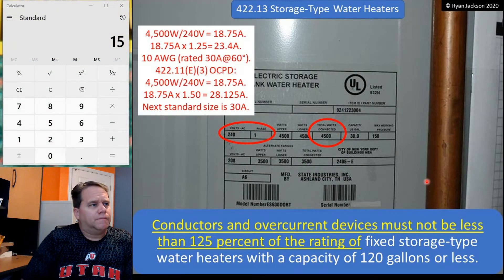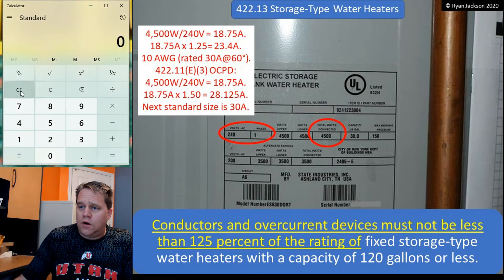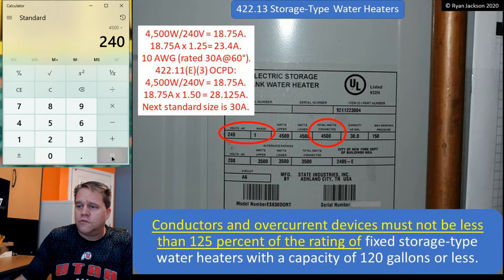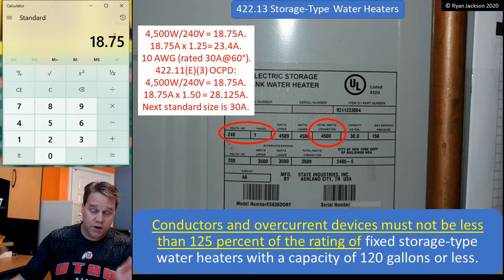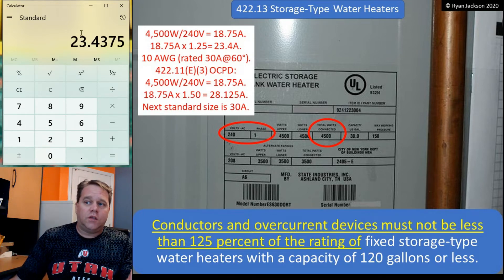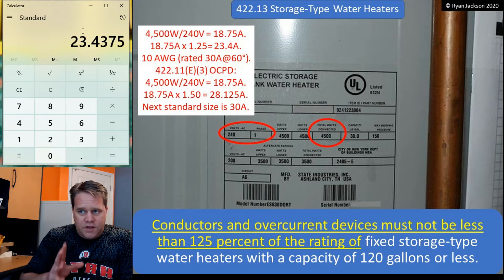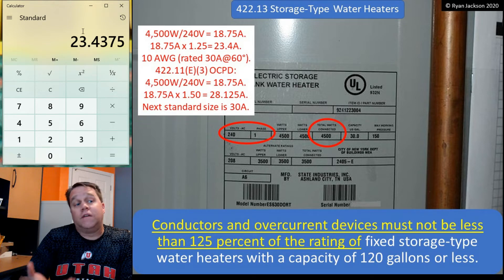Let's do one more example. Here I've got a 4,500 watt water heater at 240 volts. I take 4,500 watts divided by 240 volts — that gives me 18.75 amps. The conductor has to be at least 125% of that, and so does the breaker or fuse. So it has to be at least 23 amps — 10 gauge wire. 10 gauge wire is good for 30 amps, and 12 gauge is good for 20. So we're going to use 10 gauge wire, and it has to be at least a 23 amp overcurrent device, so let's go with a 25 amp breaker or fuse.